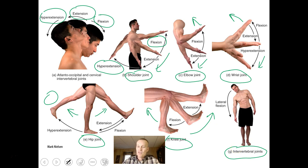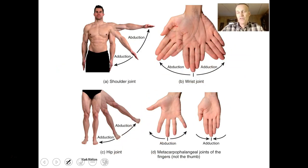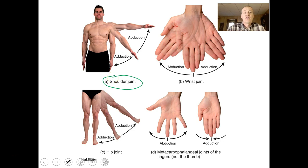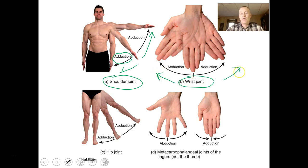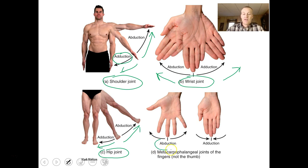For intervertebral joints, flexing to the side is lateral flexion. Some of these movements are important for studying muscles — there are muscles called abductors (A-B) and adductors (A-D). At the shoulder joint, adduction is bringing the arm back to rest at the side of the body; abduction is bringing it out to the side. For the wrist, you can abduct the hand outward or adduct it back toward the midline. For the hip, adduction brings the foot toward the midline; abduction brings it out. For the fingers, abduction is opening them and adduction is closing them together.